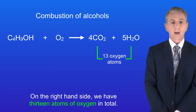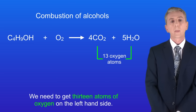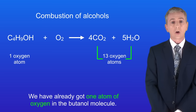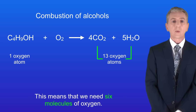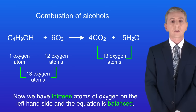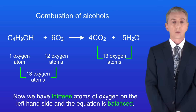On the right hand side we've got 13 atoms of oxygen in total. We need to get 13 atoms of oxygen on the left hand side. We've already got one atom of oxygen in the butanol molecule, so this means that we need six molecules of oxygen. Now we've got 13 atoms of oxygen on the left hand side and the equation is balanced. Remember, you'll find plenty of questions on the reactions of alcohols in my revision workbook — you can get that by clicking on the link above.